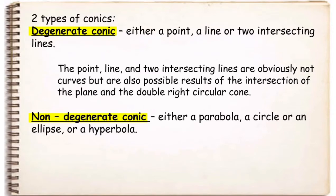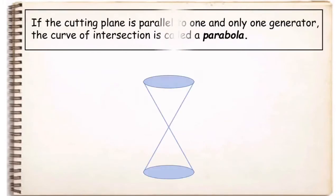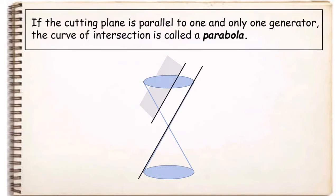Non-degenerate conics can be characterized by the number of generators which are parallel to a cutting plane. Remember, generators are lines lying on the cone. A parabola is formed if the cutting plane is parallel to one and only one generator. This plane is parallel to only one generator, therefore the curve of intersection is called a parabola.